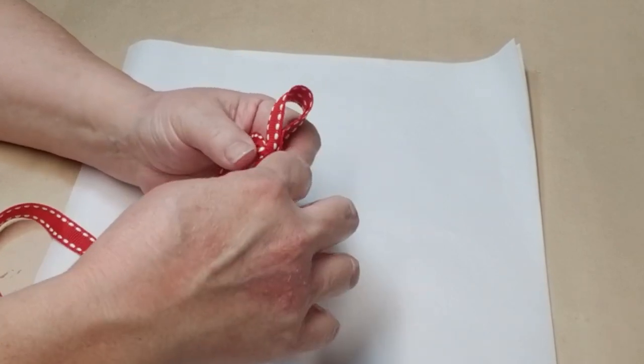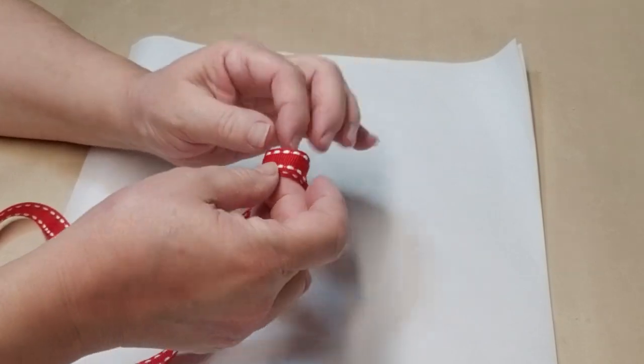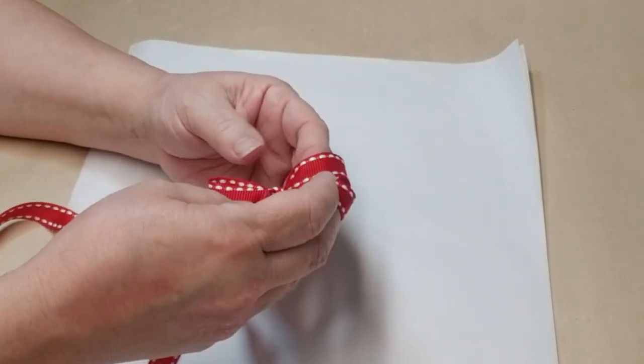Take it off your fingers, open up those two loops on either side, and you've got yourself a two-finger bow.